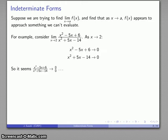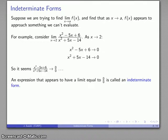And so it appears that our rational expression is going to 0 over 0, but we can't divide by 0. And so what we have here is one of a number of different types of what are called indeterminate forms.